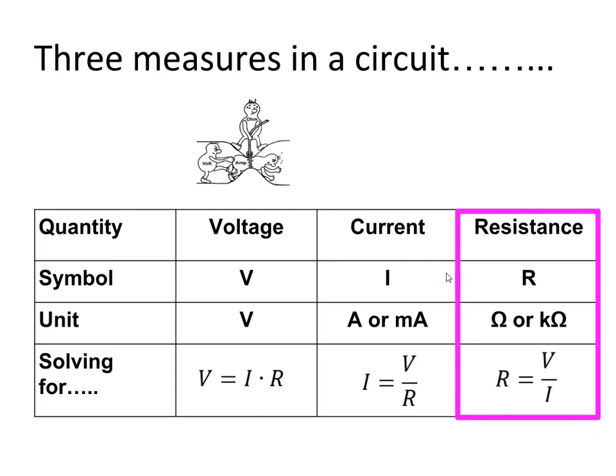Finally we have resistance. The symbol for resistance is capital R. The unit for resistance is ohm or kilohm. To calculate resistance we divide the voltage by the current.